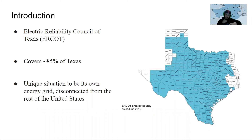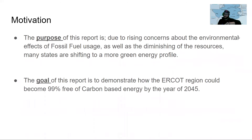ERCOT covers about 85% of Texas and is in its own unique situation — its own separate energy grid disconnected from the rest of the United States. Due to rising concerns about the environmental effects of fossil fuel usage and the diminishing of those resources, many states are shifting to a more green energy profile. The goal of this report is to demonstrate how the ERCOT region can become 99% free of carbon-based energy by the year 2045.